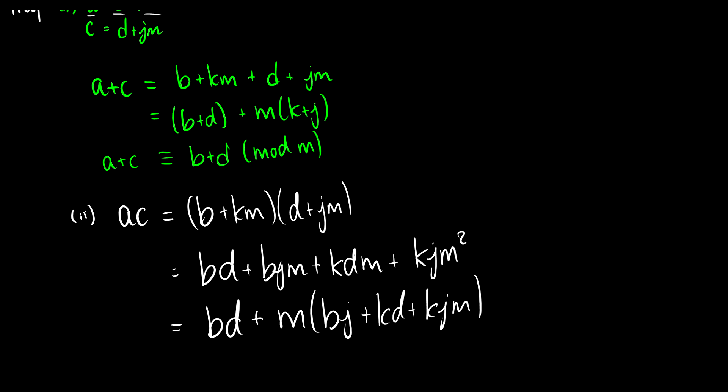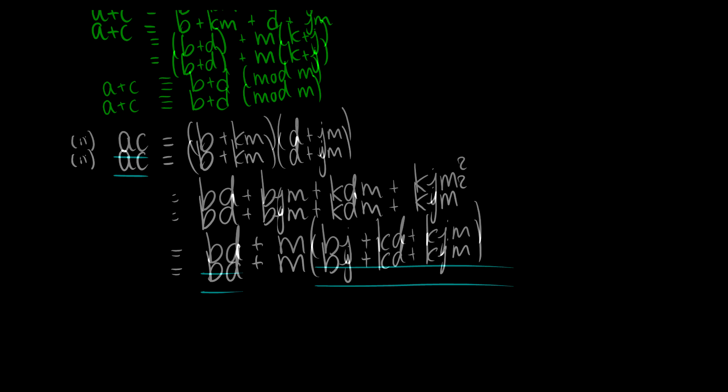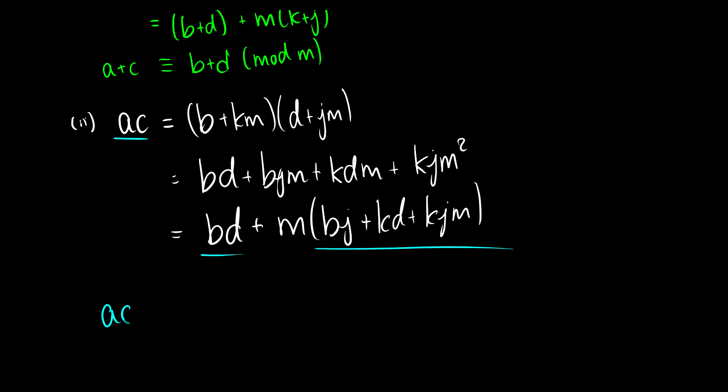a is equal to b plus m times k. So because we have all that there, we know that ac is congruent to bd mod m.